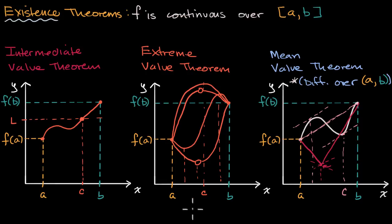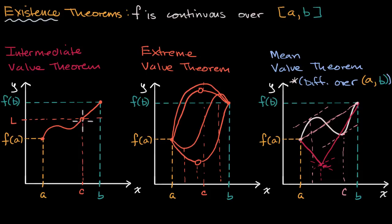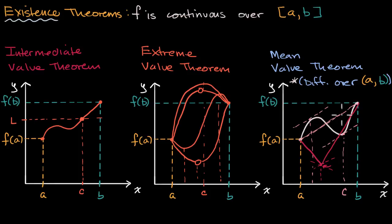In other videos we'll go into more depth, but it's nice to look at all three together and see what they're all talking about. They're all talking about the existence of an x value in the interval where something interesting happens: where we take on a value between f(a) and f(b), where we take on extreme values, or where the derivative at that point is the same as the average rate of change over the interval.